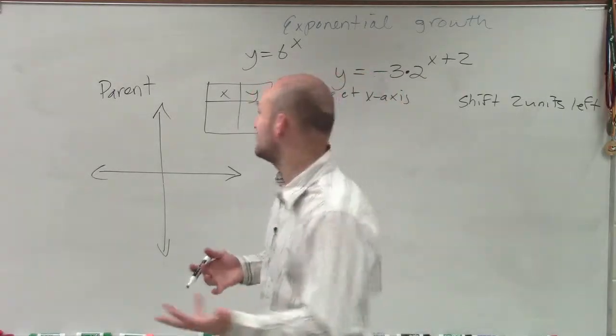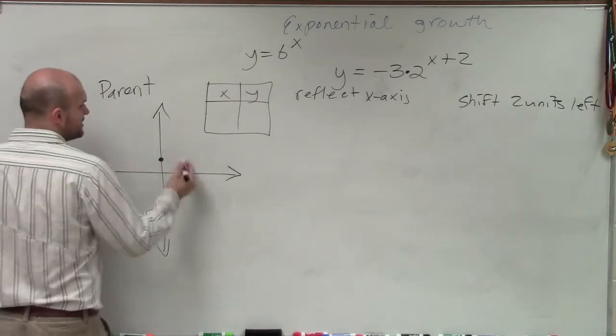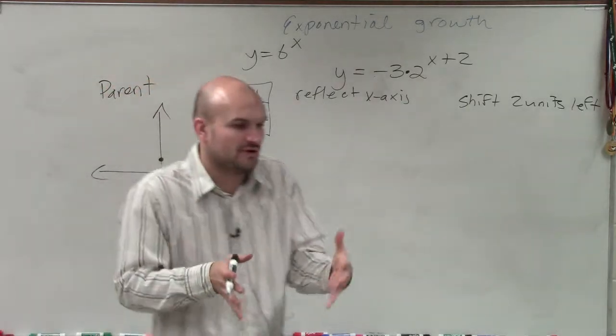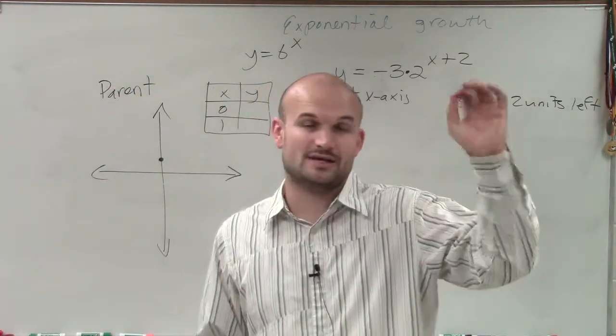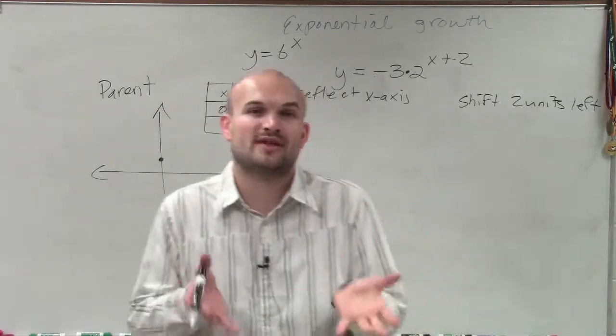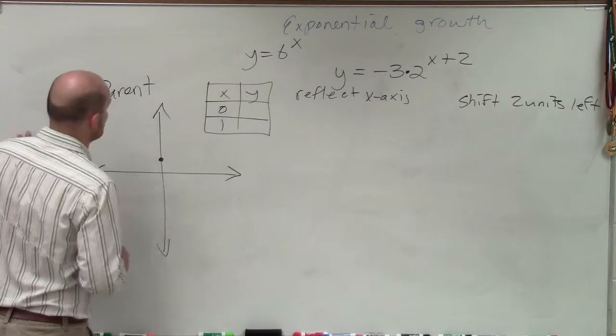But when creating table of values with exponential function, there's two important points that we have. One, where the graph crosses the y-axis, and the other one where x equals 1. And we can easily find those, because if we take a value and raise it to the 0 power, we know that's going to equal 1. And if we take a value and raise it to 1, we know it's just going to equal that base. So what I'm going to do is I'm going to evaluate for our graph for each one of these.